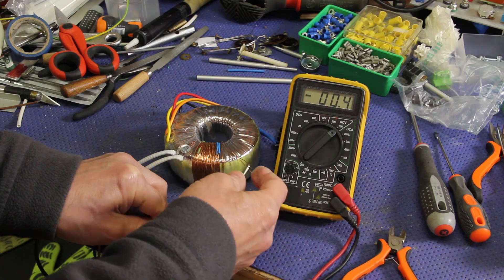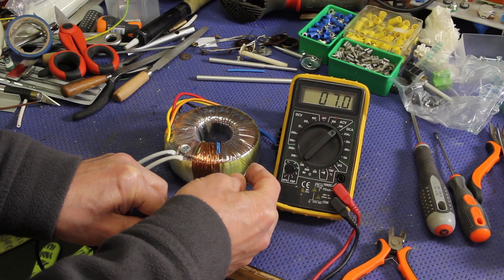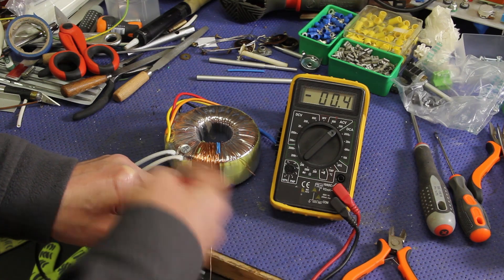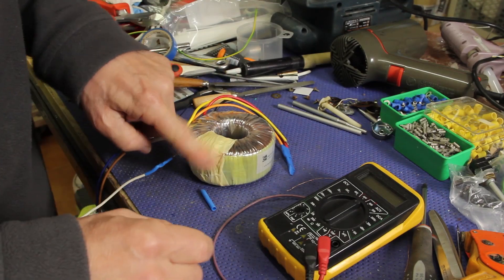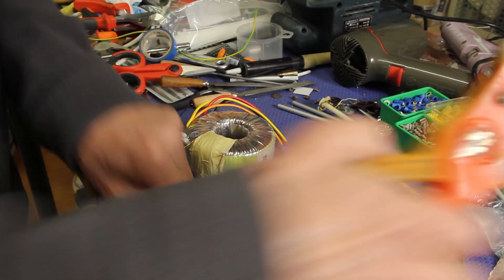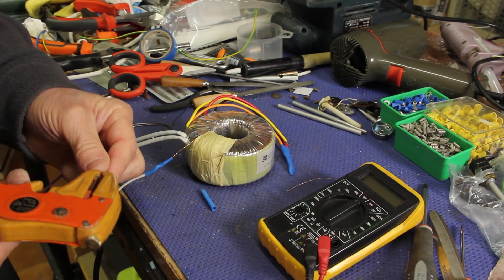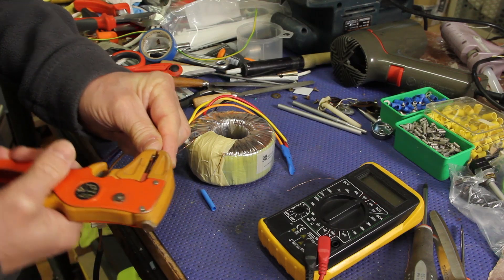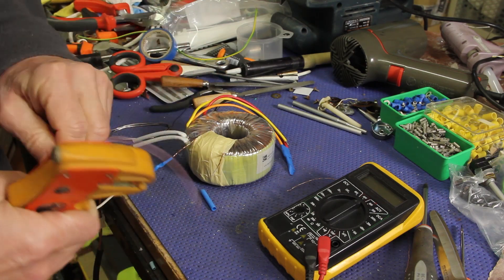Remember that the enamel must be scratched away from the wire before soldering or using the wire. Now let's finish the coil with a tape to keep it in place and adding the wires, terminal wires.